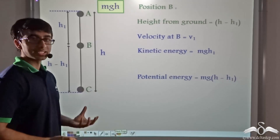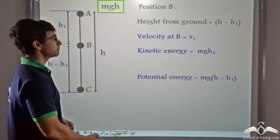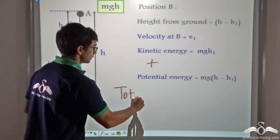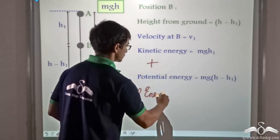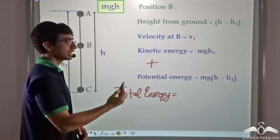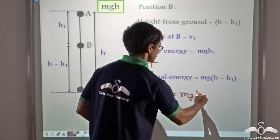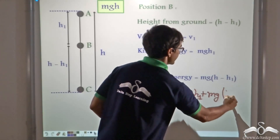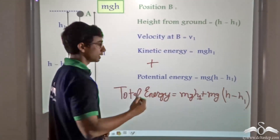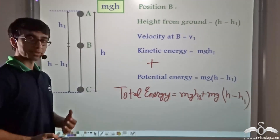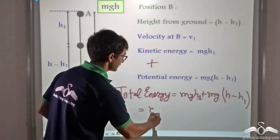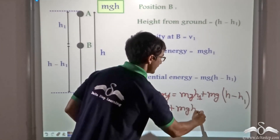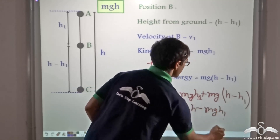Now we can find out the total energy of the ball at B by simply adding up these two quantities. So what will it give us? The total energy will be equal to MGH1, that is the kinetic energy, plus MG(H minus H1). So if I open the brackets by multiplication, I will get MGH1 + MGH − MGH1.